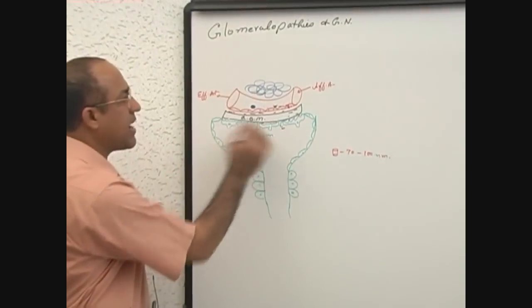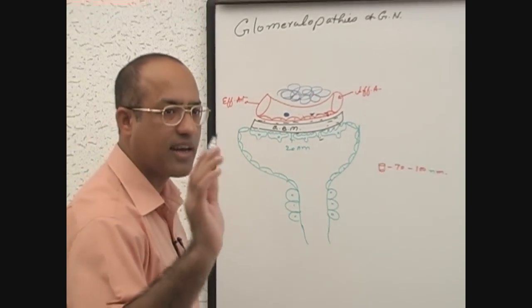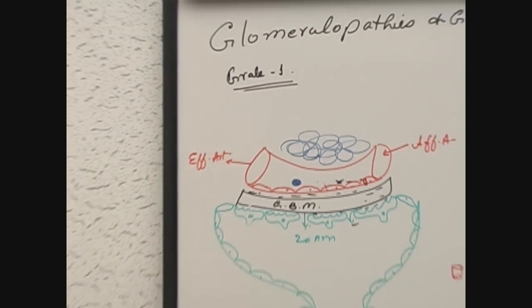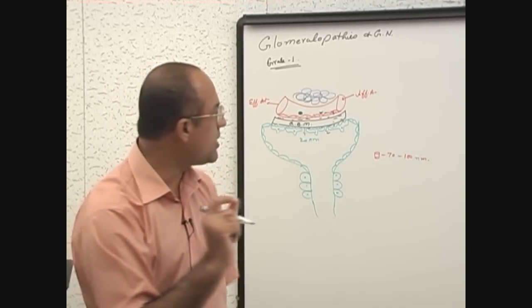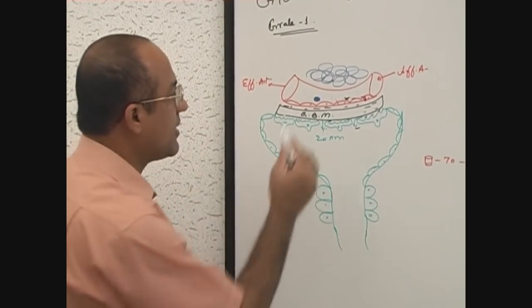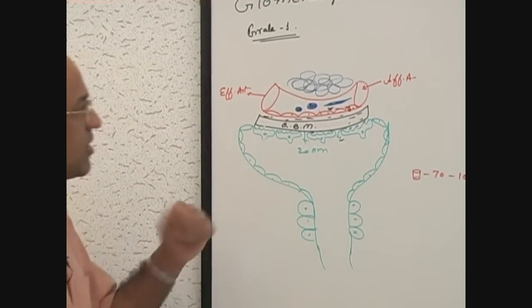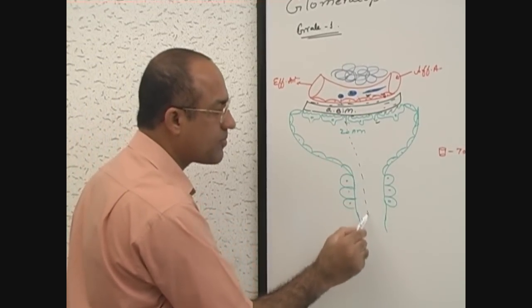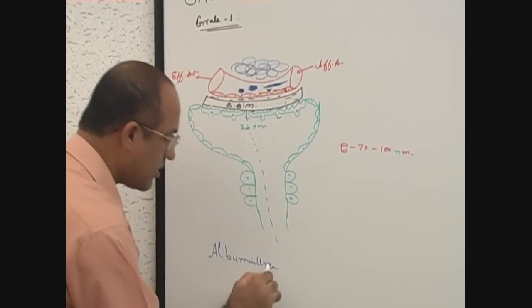Suppose there is a very mild injury to the glomerulus — let's call it grade 1 — due to some immunological mechanism. When there is a very minor injury, the smallest molecules will start leaking. The smallest molecules are albumins, so what happens is albumin starts coming down into the urine, and we say there is albuminuria.